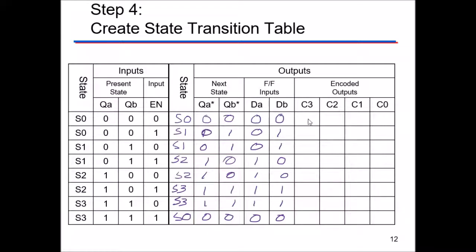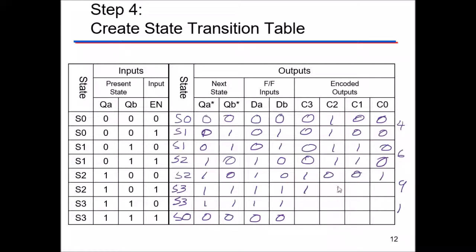Finally, fill in the encoded outputs — this is what I want to display depending on the current state. When in state zero, display four in binary: 0100. When in state one, display six in binary: 0110. When in state two, display nine in binary: 1001. When in state three, display one in binary: 0001. That completes the state transition table.